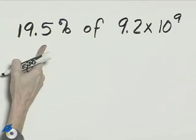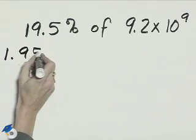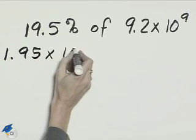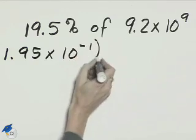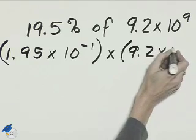19.5 percent in scientific notation is 1.95 times 10 to the negative 1. That's going to be multiplied by 9.2 times 10 to the 9th.